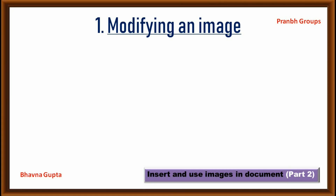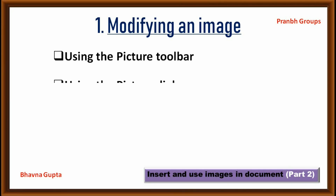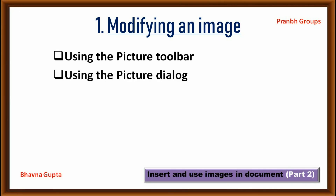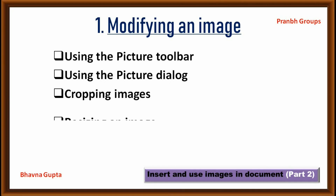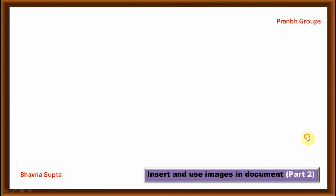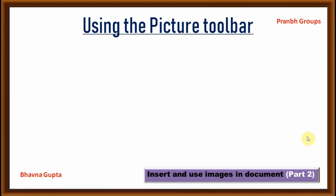First topic: Modifying an image. There are 4 methods for modification. First, using the picture toolbar. Second, using a picture dialog box. Third, copying an image. And fourth, resizing an image. Let's move to the first method — using the picture toolbar.